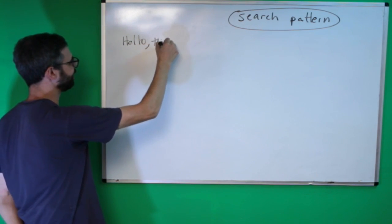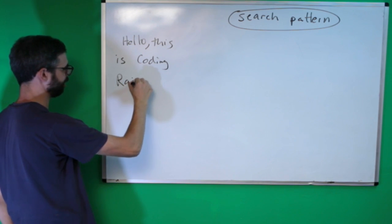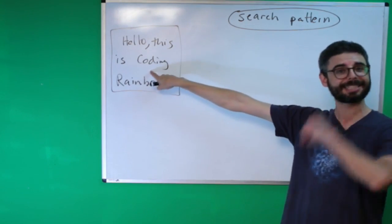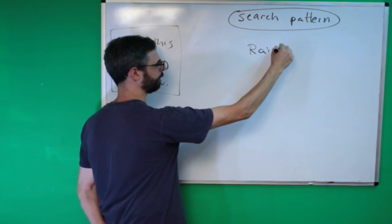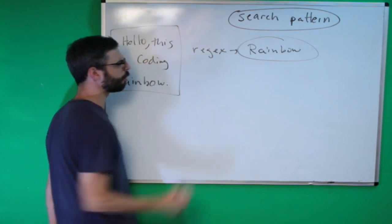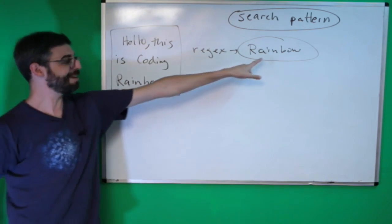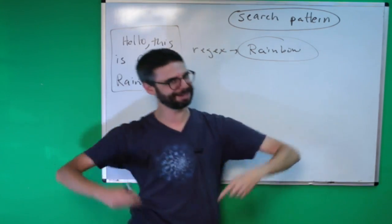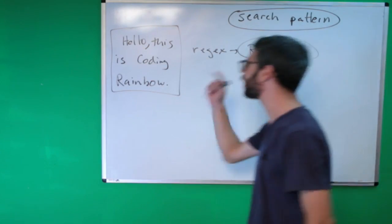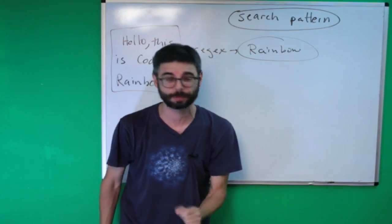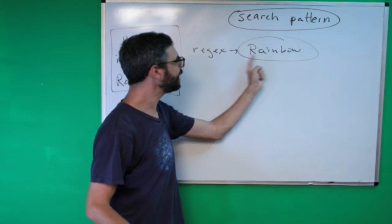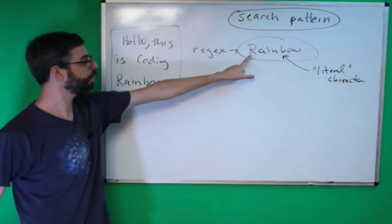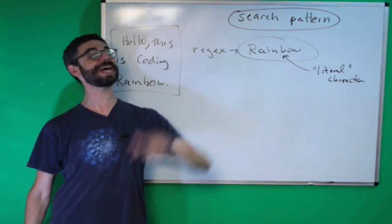Here is some text — "Hello this is Coding Rainbow." Here is a regular expression, often referred to as regex. This is a valid regular expression: capital R followed by lowercase a, i, n, b, o, w. Each of these characters is a literal character — the pattern is literally capital R followed by lowercase a, and so on.